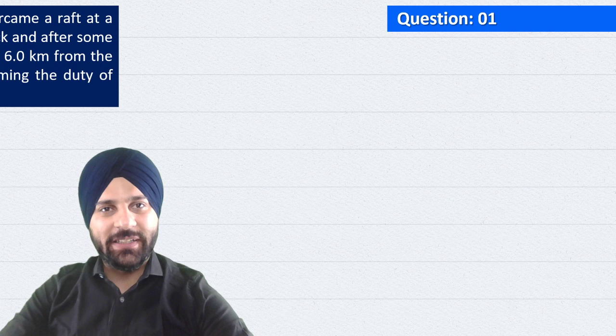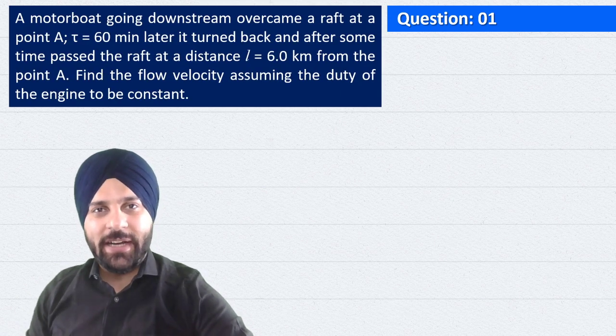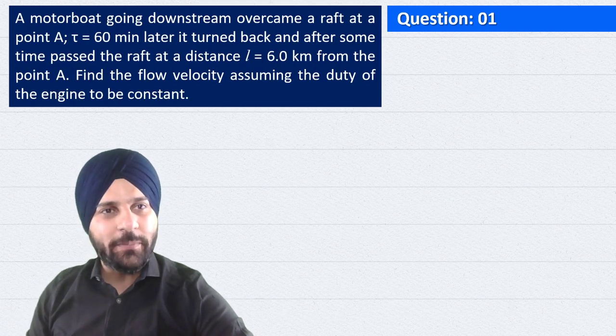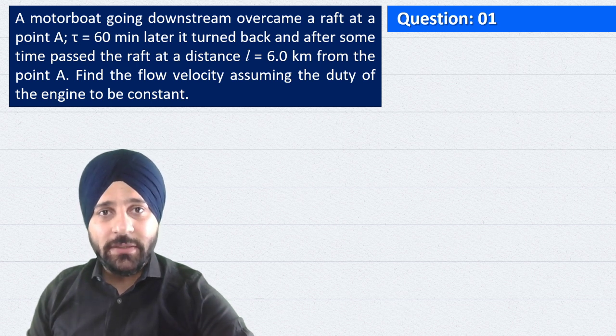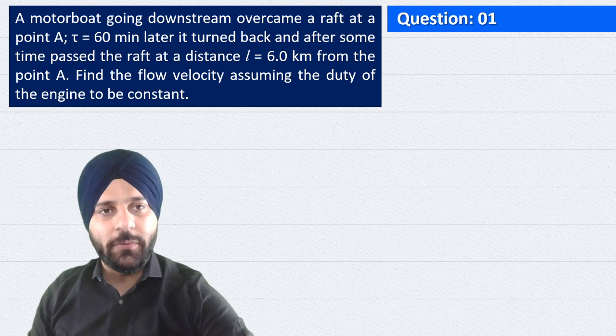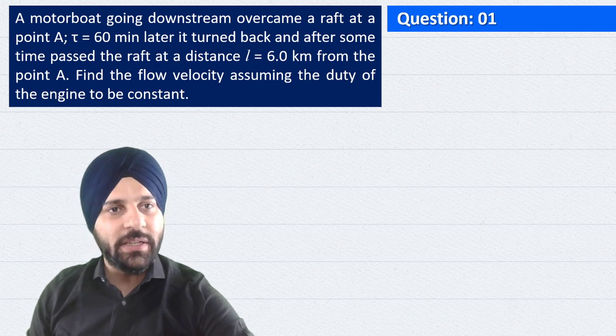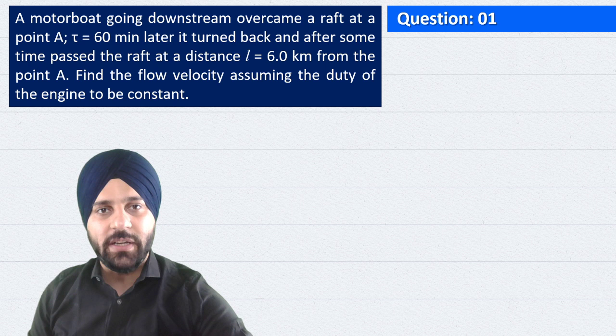Hello students, question number one. A motorboat going downstream overcame a raft at point A. T equals 60 minutes later it turned back and after some time it passed the raft at a distance of 6 kilometers from point A. Find the flow velocity assuming the duty of the engine to be constant.